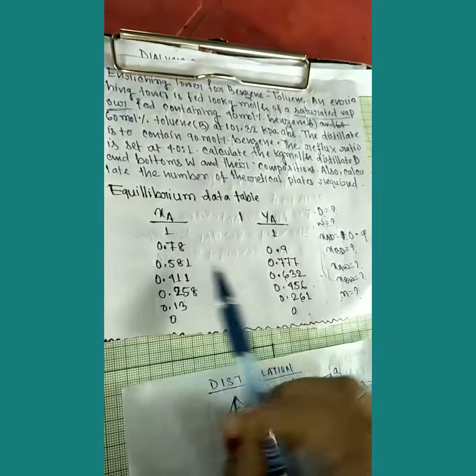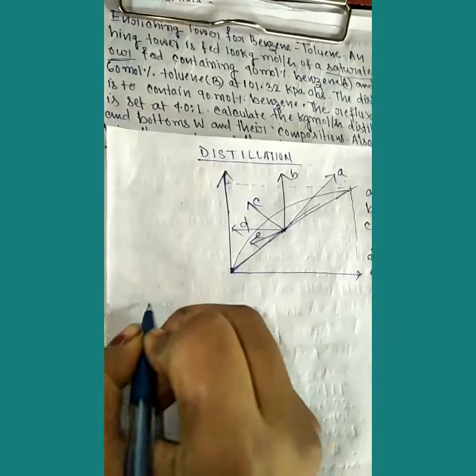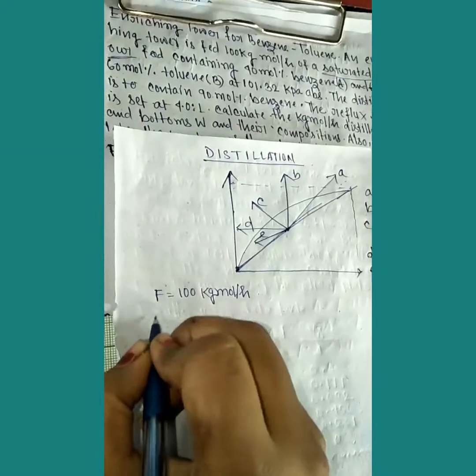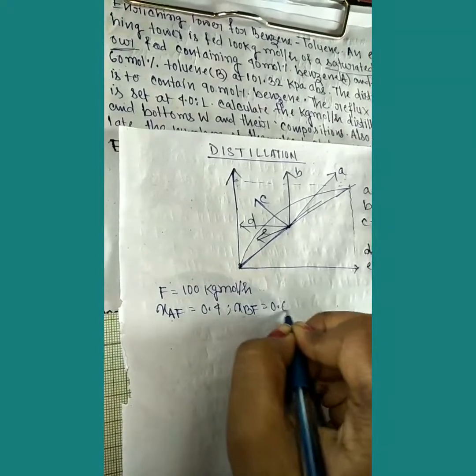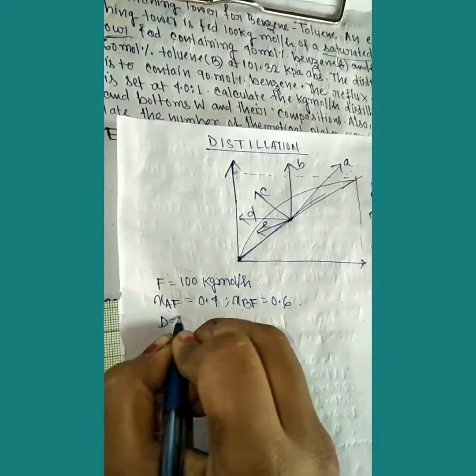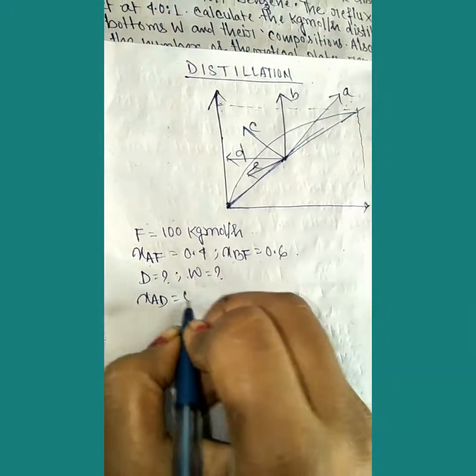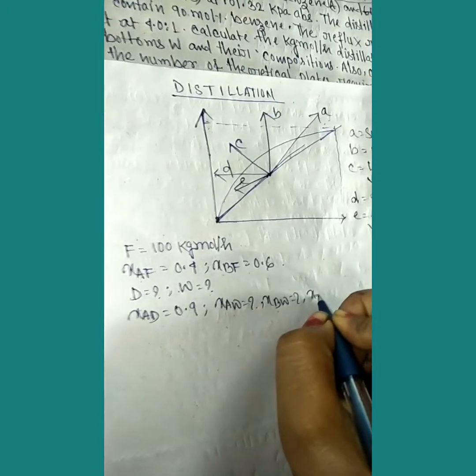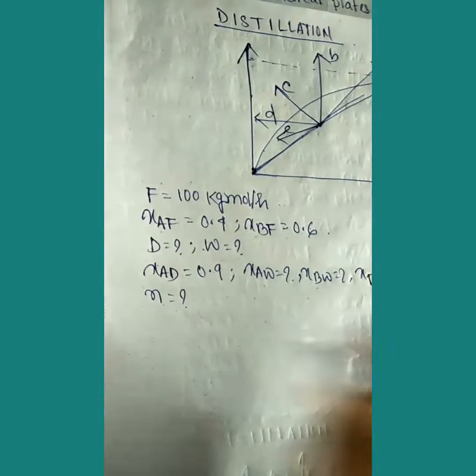The reflux ratio is set at 4. Calculate the kg mole per hour of distillate and bottoms, their compositions, and also calculate the number of theoretical plates. The equilibrium data is given. Now let's write what is given and what is not. Feed F is 100 kg mole per hour. xaf is 0.4, mole fraction benzene is 0.6. Distillate amount D has to be calculated, W has to be calculated, but xad distillate benzene mole fraction is 0.9. xbw, xbd, and D all have to be calculated, as well as number of plates from the graph.